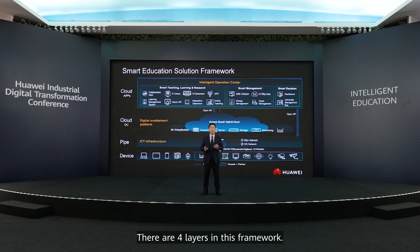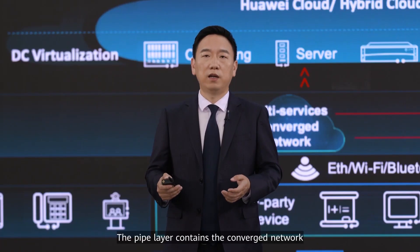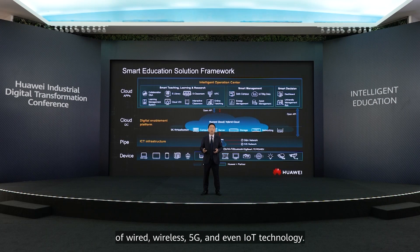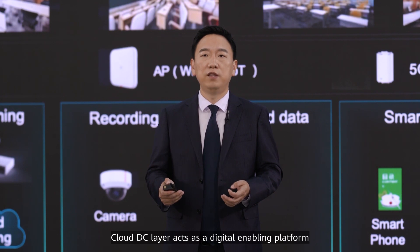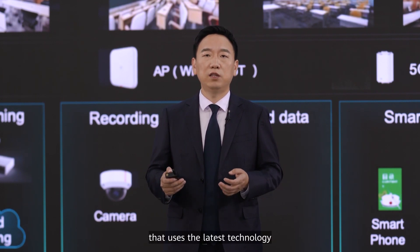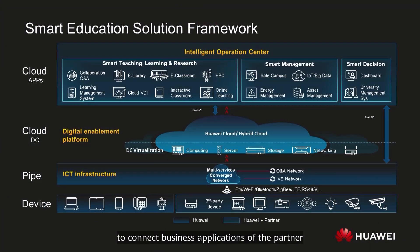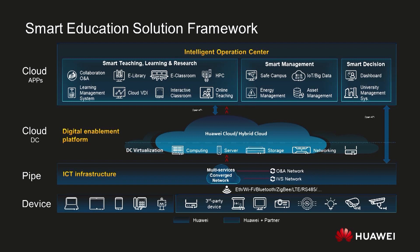There are four layers in this framework. Smart devices extend to each student, teacher and each classroom. The pipeline layer contains the convergent network of wired, wireless, 5G and IoT technology. The Cloud DC layer acts as a digital enabling platform that uses the latest technology to connect business applications of partners through open interfaces. The application layer presents various functional applications of teaching, research, management and analytics.